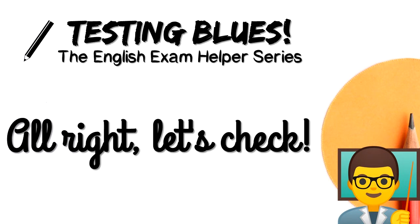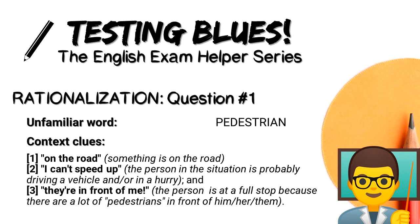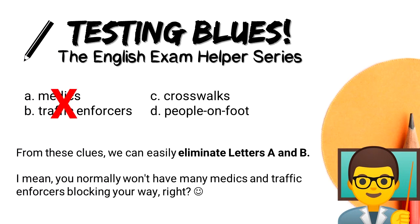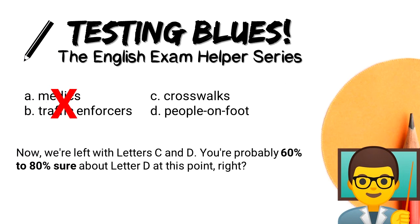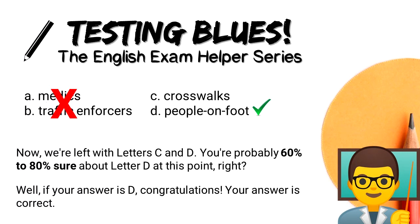Alright, let's check. If you're with us last episode, you will notice the context clues: 'on the road,' which simply means something is on the road; 'I can't speed up,' which means the person is probably driving a vehicle and/or in a hurry; and 'they're in front of me,' which means the person is at a full stop because there are a lot of pedestrians in front of him/her/them. From these clues, we can easily eliminate letters A and B — you normally won't have many medics and traffic enforcers blocking your way. We're left with letters C and D, and you're probably 60 to 80% sure about letter D. If your answer is D, congratulations! Your answer is correct.